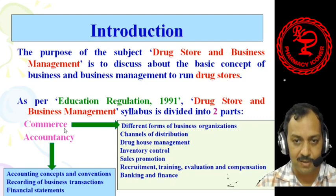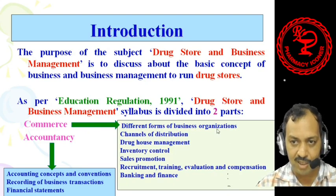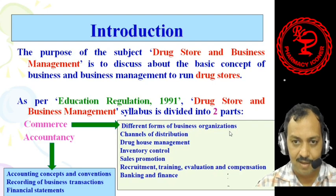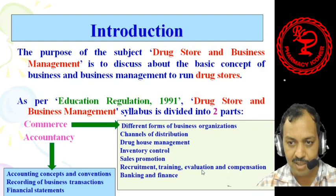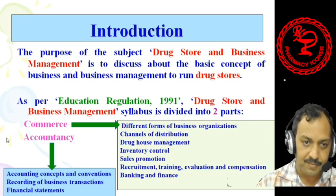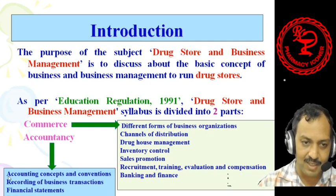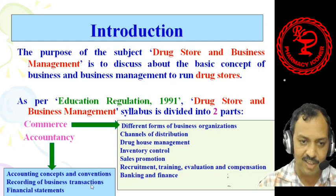Part 1 is Commerce, which includes chapters on different forms of business organizations, channels of distribution, drug house management, inventory control, sales promotion, recruitment, training, evaluation and compensation of pharmacists, and finally Banking and Finance. Part 2 is Accountancy, which includes chapters like Accounting Concepts and Conventions, Recording of Business Transactions, and Financial Statements and Budgeting.